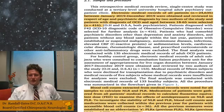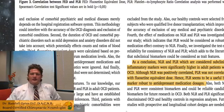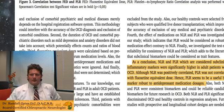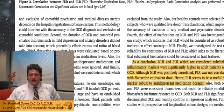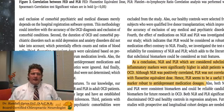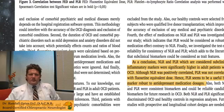The NLR — neutrophil to lymphocyte ratio — and PLR, as a conclusion, were significantly higher in adult patients with OCD. Although NLR was positively correlated, PLR was not correlated with fluoxetine equivalent dose. Hence, PLR seems to be a useful biomarker robust to antidepressant medication dosages. Basically, the PLR is independent of whether patients are taking antidepressants, so even if you have OCD and you're taking Prozac, the PLR is still a good indicator of what level of inflammation you have in your body.